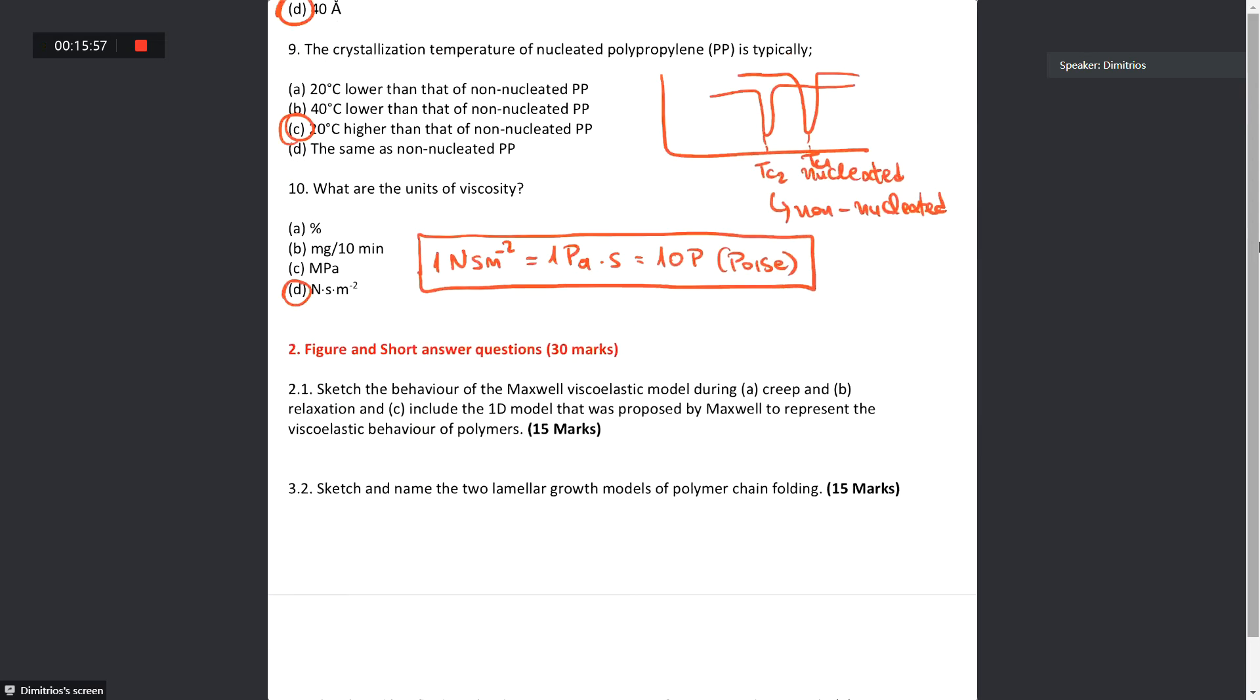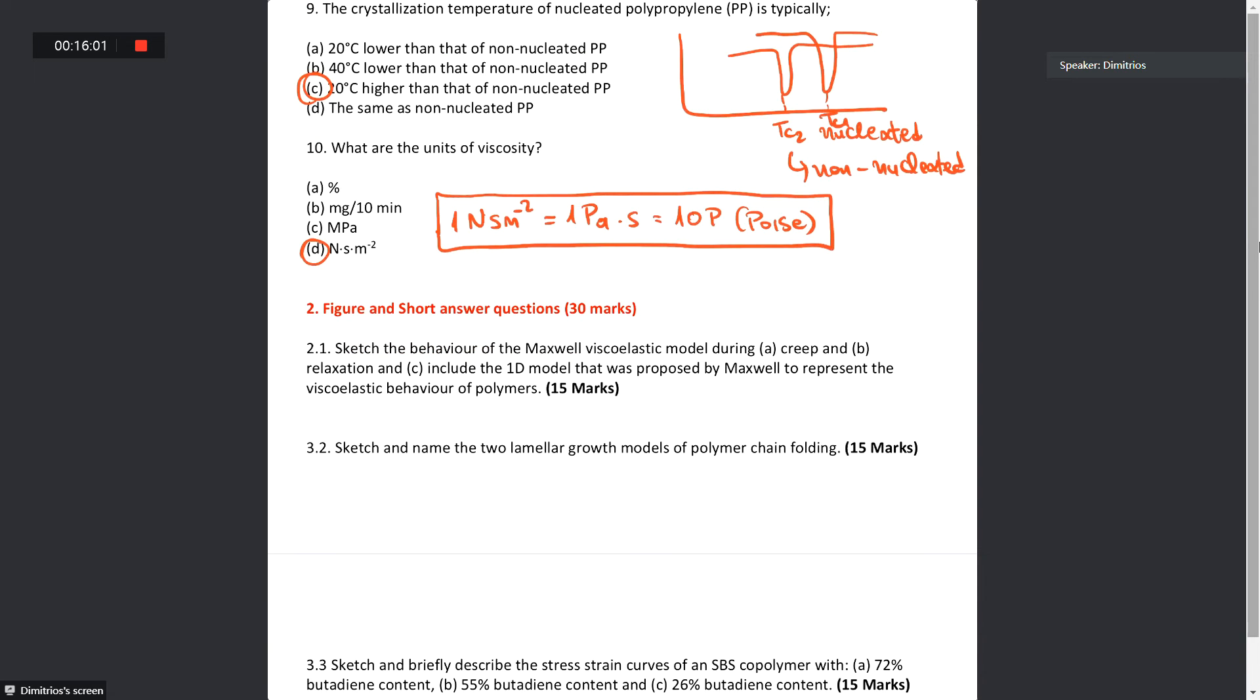Now let's go to figure and short answer questions. I will provide you with these solutions after we finish today. Two diagram questions. We have to sketch the behavior of Maxwell viscoelastic model during creep and relaxation and include the model that was proposed by Maxwell to represent the viscoelastic behavior of polymer. In the exam, you will need to draw a couple of graphs where you represent some relationships or some theories we discussed during the course.